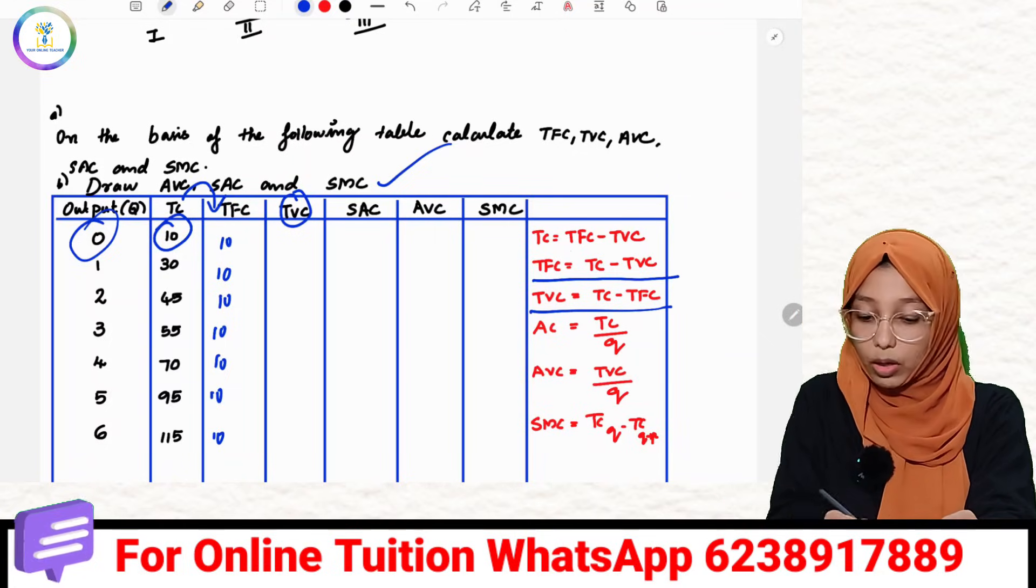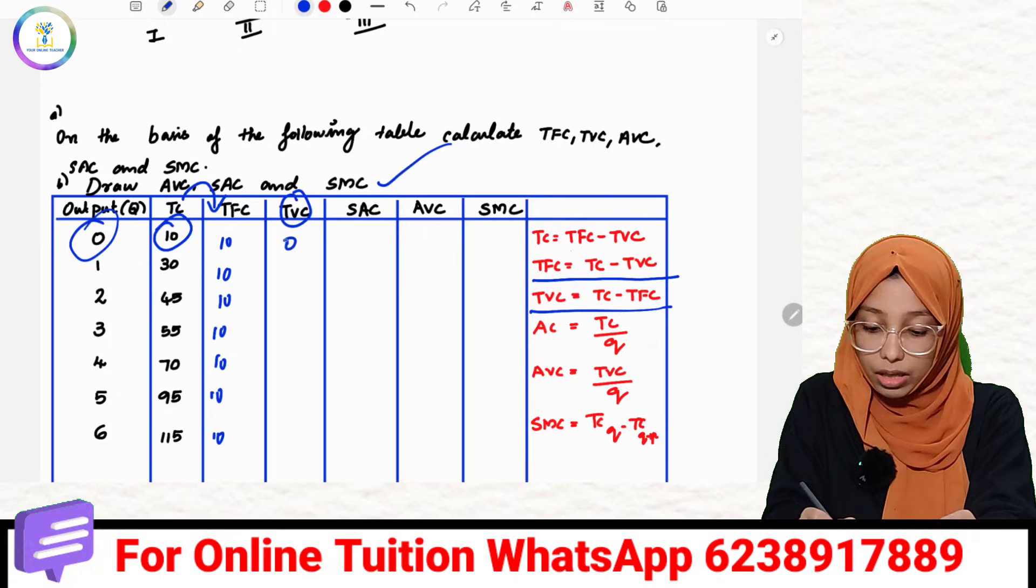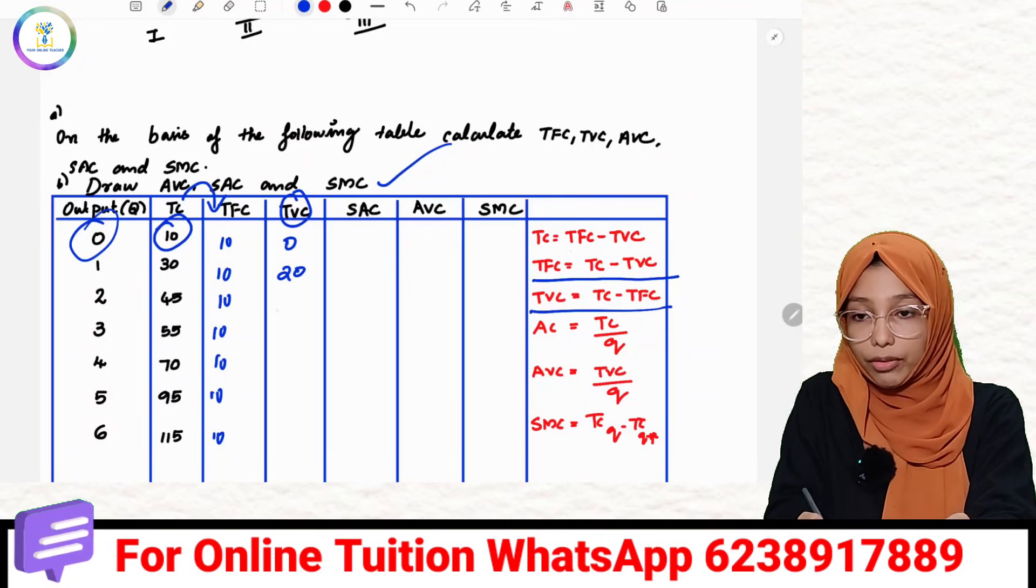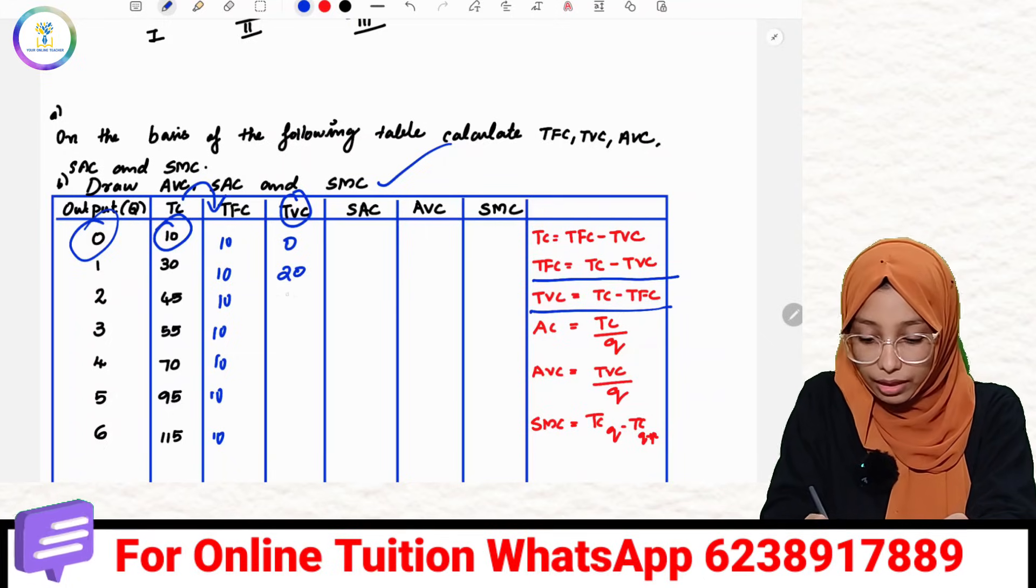TLC minus TFC. Now that is equal to 0. Then 30 minus 10 is equal to 20. Then 45 minus 10 is equal to 35.